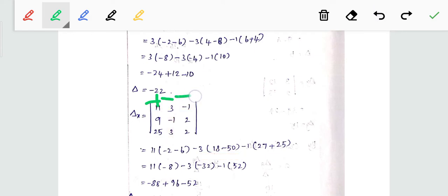Then next is plus into minus 1, minus 1, corresponding row column: 27 minus half, minus 25, plus 25.